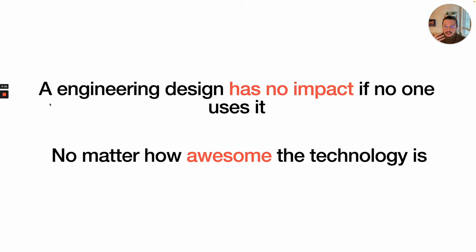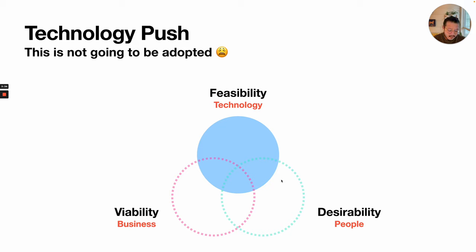The key idea here is that engineering design has no impact if no one uses it. It doesn't matter how awesome the technology is — and this is a mistake that many engineers make. We have a term for it called technology push: the idea that we focus on how cool or amazing a technology is and develop a product based on that. But if the design is coming from the technology pushing us toward a particular design, we're likely to neglect viability and desirability. When we're missing both, the product is definitely not going to get adopted.